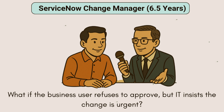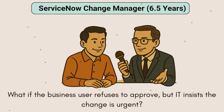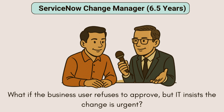What if the business user refuses to approve, but IT insists the change is urgent? Okay, so being a change manager, I act as a neutral point of coordination here. I try to help the business understand the urgency and the potential risk of delay, and help IT understand the business concerns as well. Finally, we come to a common ground. If both sides still disagree, I escalate the case to the CAB and let all stakeholders decide what is best. Or I can go to the change authority — most of the people in change authority are from the CAB — and put forward the proposal to the CAB, and then we make a final decision.